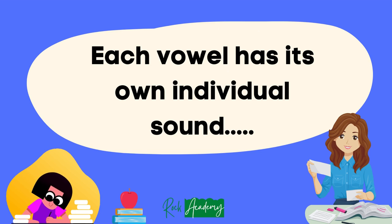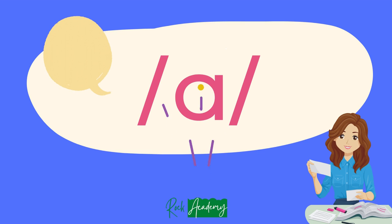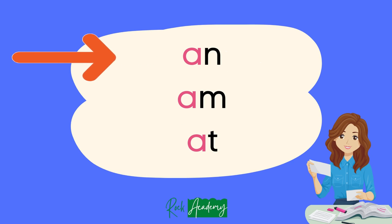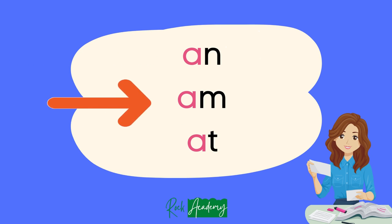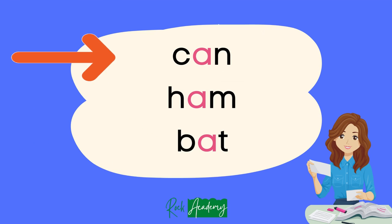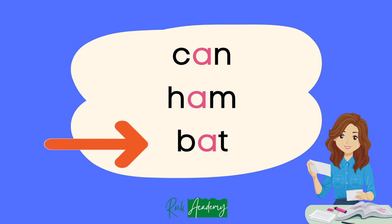Each vowel has its own individual sound. The A has an A sound. Here are some examples of the A sound: An, Am, At, Can, Ham, Bat.